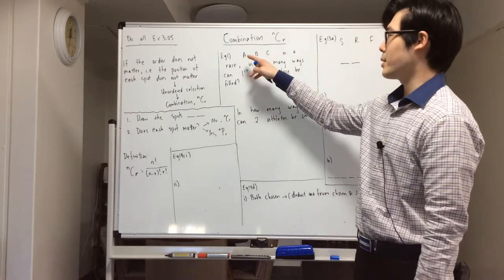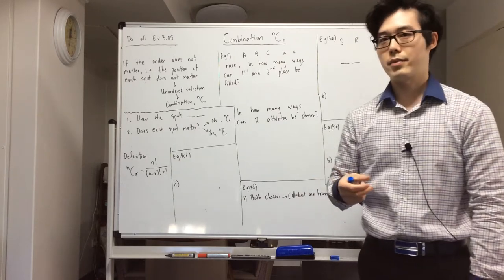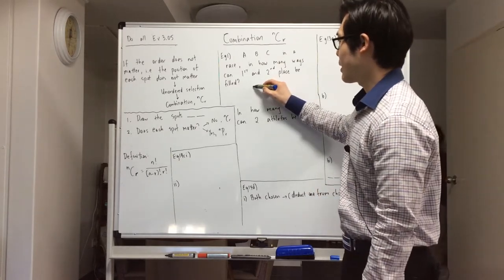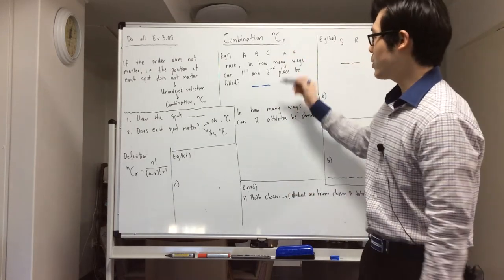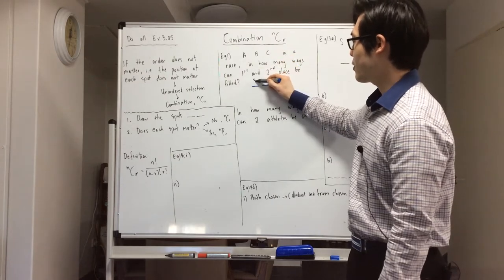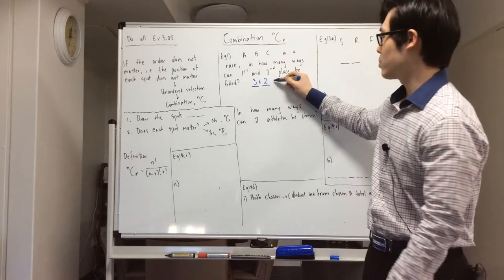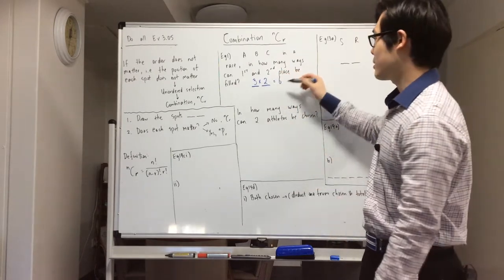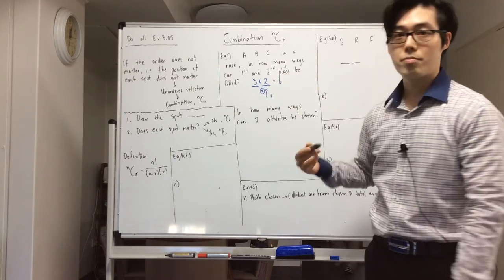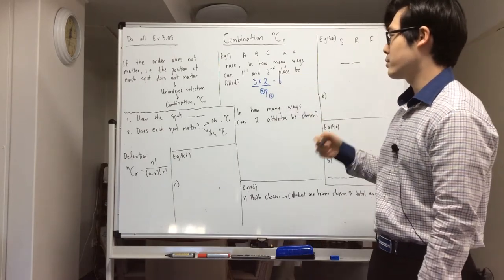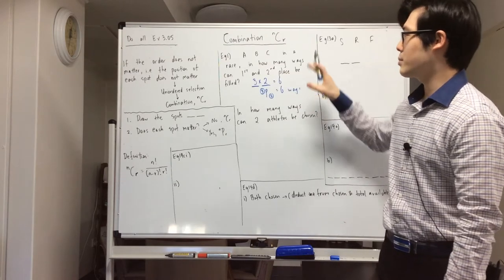Let's say we have three people A, B, C in a race. In how many ways can first and second place be filled? We can have any of the three people being first and any of the two people being second, so we just multiply those two, which is six ways. From last lesson, this can also be expressed as 3P2 — 3 for the number of people and 2 for the number of spots available. That's six ways.